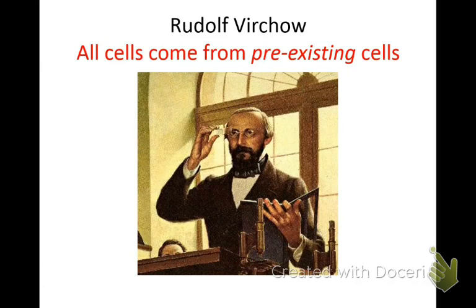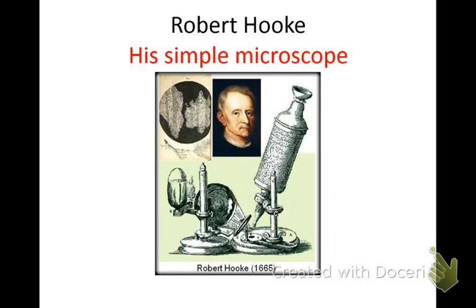Emergent properties — on D, underline that. It just means that the cell is working together as one unit; all the little pieces and organelles are working together as one unit. An open system, listed in E, means there are materials coming into the cell and out of the cell that are helping it function. The microscope was developed by Robert Hooke. He developed a simple lens microscope — kind of like a magnifying glass — in 1665.